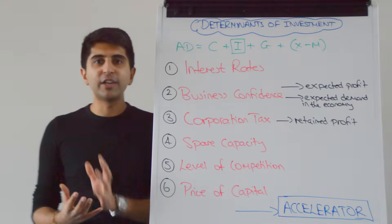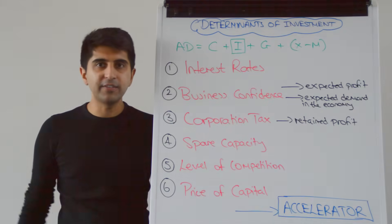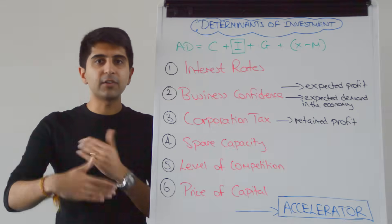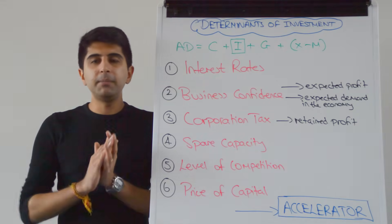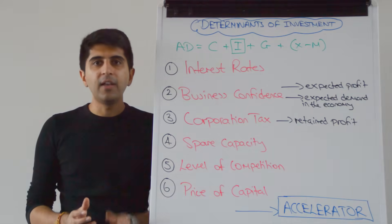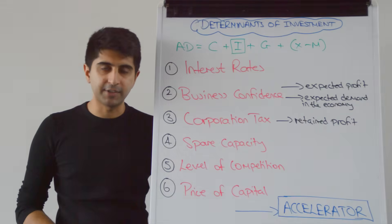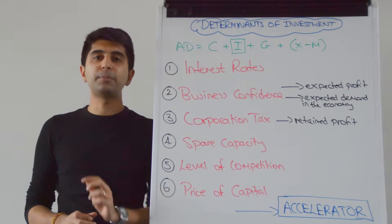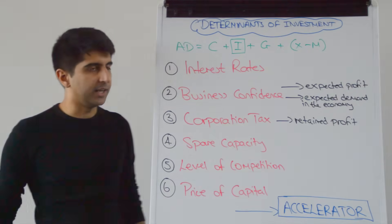Hi everybody. Let's continue by looking at the determinants of investment. Investment is a key part of the aggregate demand equation, and if investment increases or decreases, aggregate demand will shift either right or left. Investment can mean many different things, but in economics by default, we say that investment is when firms spend money on capital goods to increase their productive capacity.